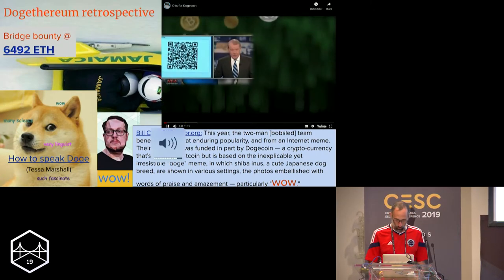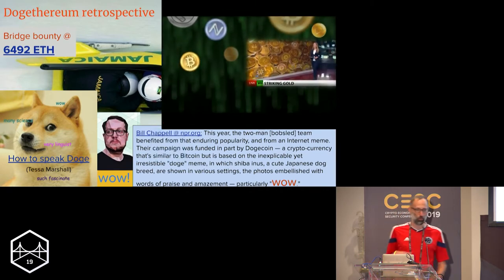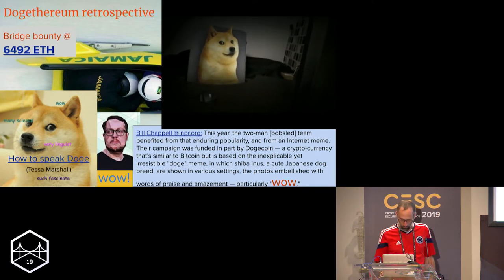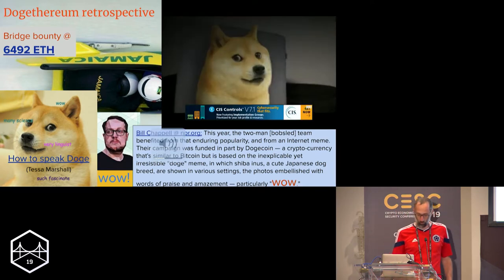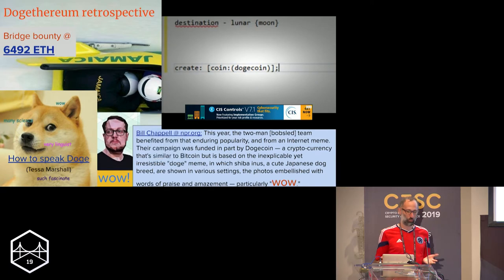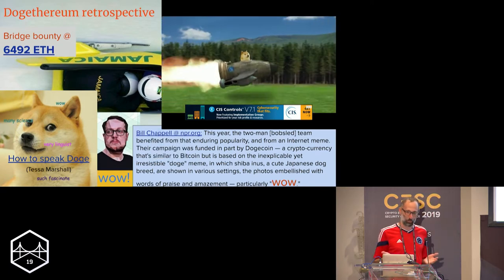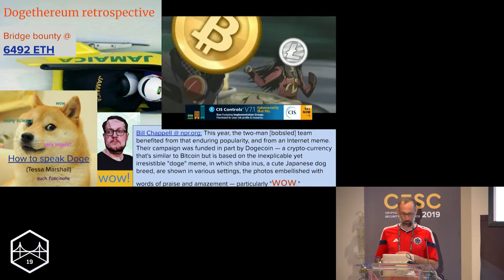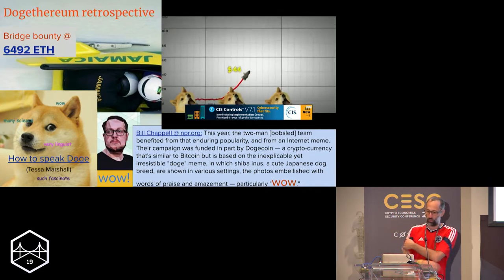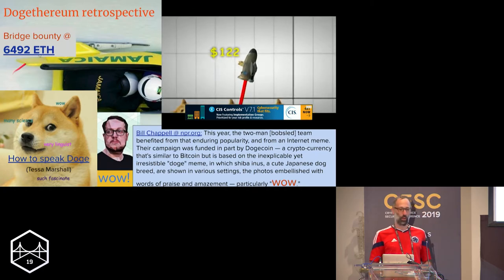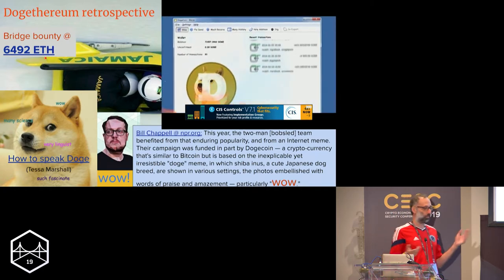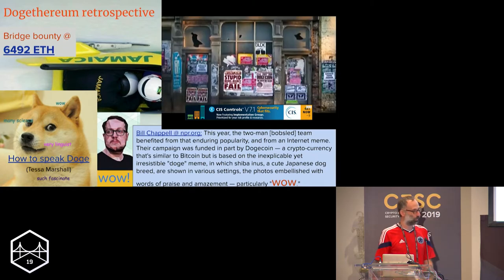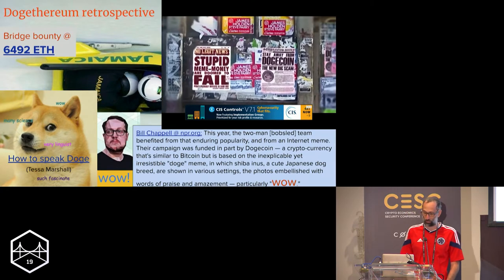Let's move on to Bitcoin — rolling our minds back to 2014. There's another coin you might be familiar with called Dogecoin. It's essentially the coin that funded a bobsled team for the Olympics in 2014 with a $30,000 crowdsourced donation. There was a bounty that went out to build a Two-Way Peg between Dogecoin and Ethereum.